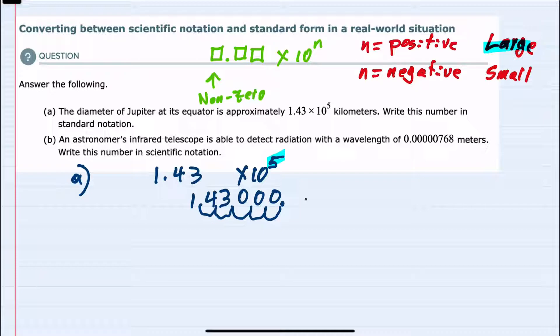In standard form, we drop the 10 to the power and have 143,000 kilometers. Positive powers in scientific notation give us large numbers. For B,